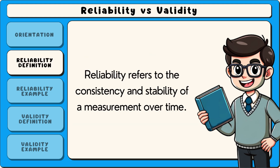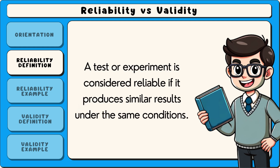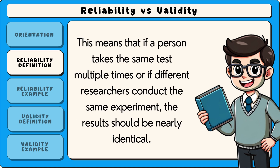Reliability refers to the consistency and stability of a measurement over time. A test or experiment is considered reliable if it produces similar results under the same conditions. This means that if a person takes the same test multiple times, or if different researchers conduct the same experiment, the results should be nearly identical.